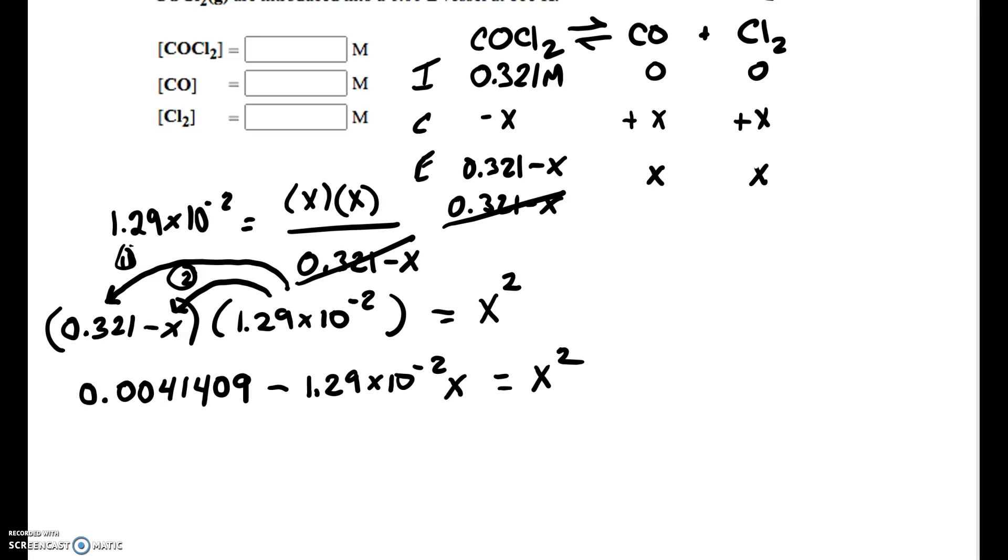What we want to do, this is a positive X squared. And what I like to do right away, X squared is the same thing as 1 X squared. So I'm going to change that to 1 X squared. So if I subtract 1 X squared, I get 0. But I have to do the same thing on the other side. And what I end up with is 0.0041409 minus 1.29 times 10 to the minus 2 X minus 1 X squared. So I couldn't subtract that from these other terms because they weren't the same. When we do addition or subtraction, they had to be like terms.